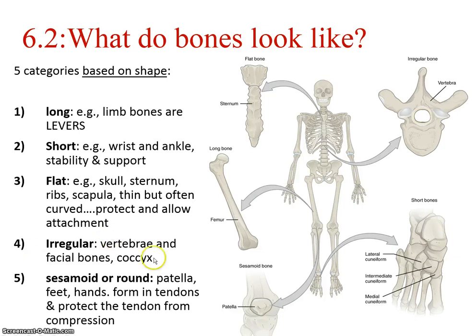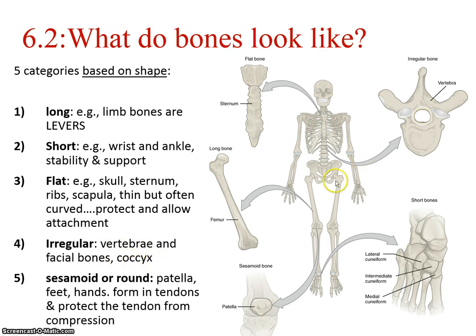Irregular bones are really none of the above. Your vertebrae fall into that category — they have all kinds of shapes with things jutting out. There are also a number of facial bones, since the cranium and facial bones make up the skull. With the vertebrae also comes the coccyx, your tailbone. Sesamoid or round bones — we really talk mostly about the patella, though there are other examples, especially in the feet.